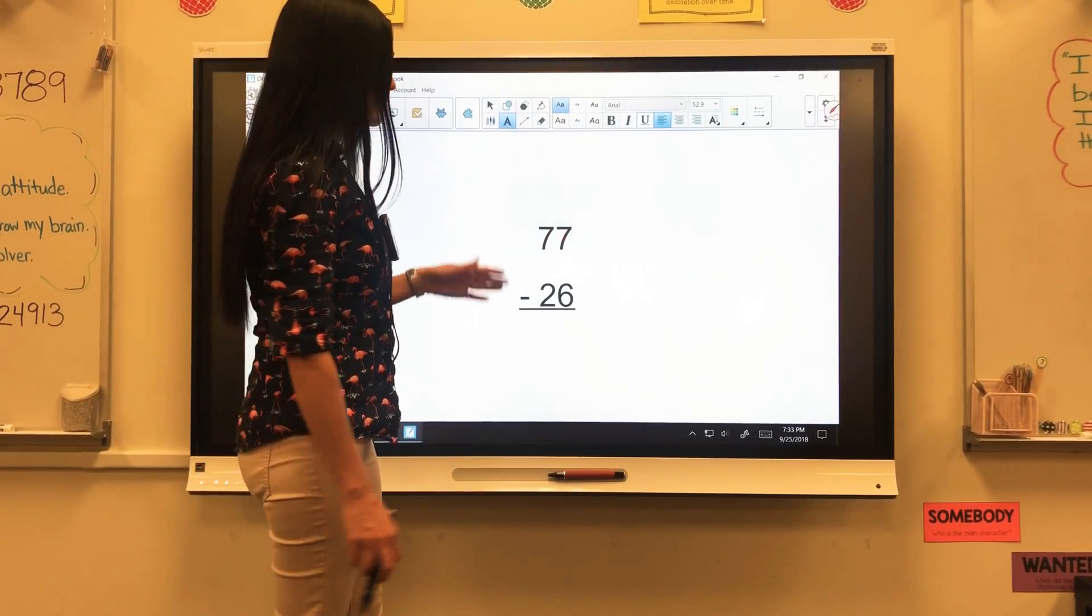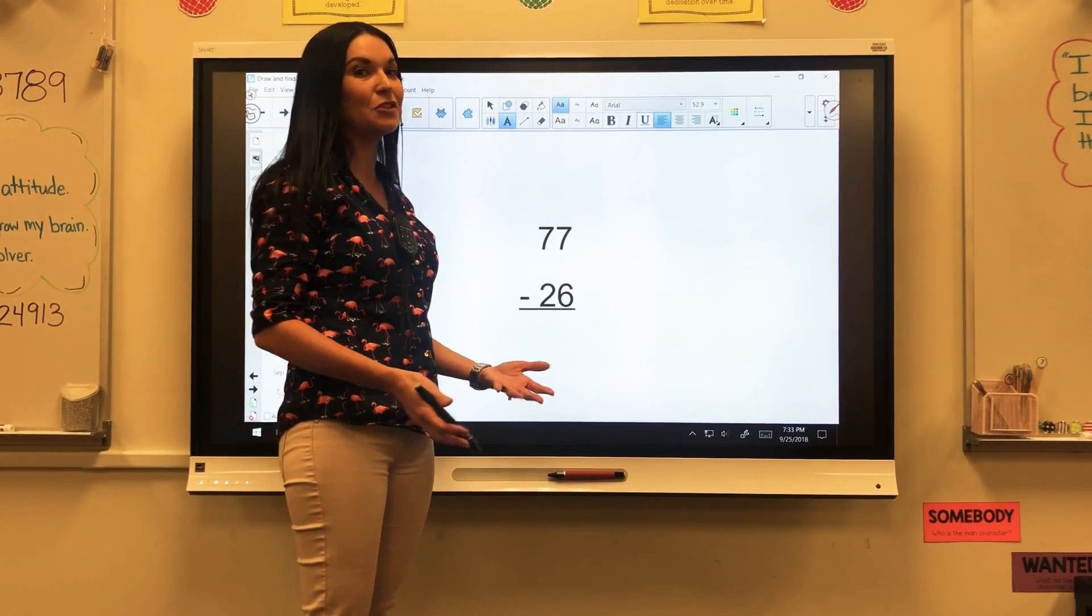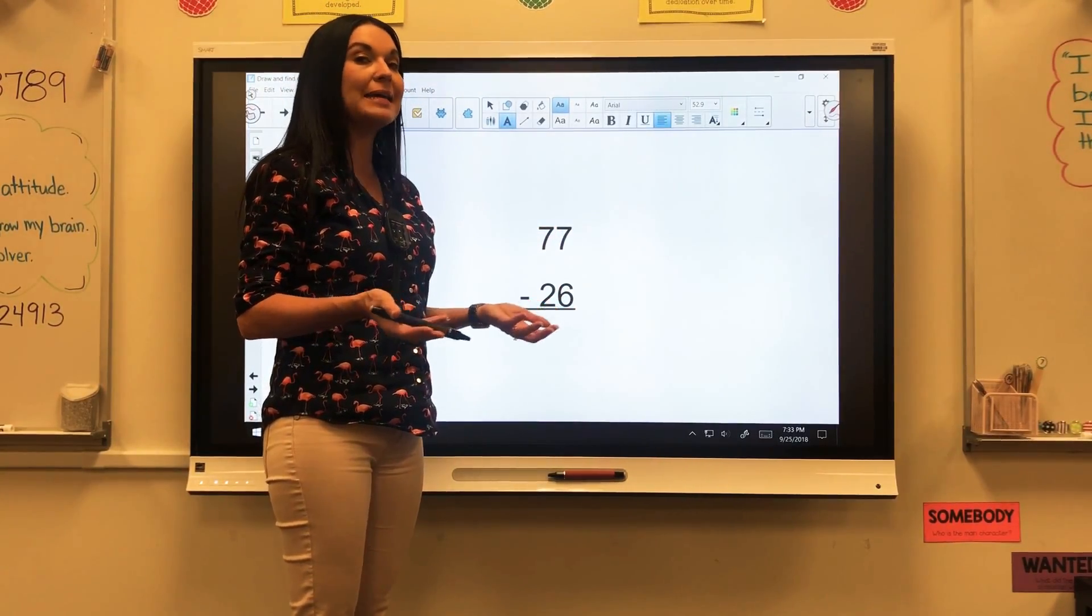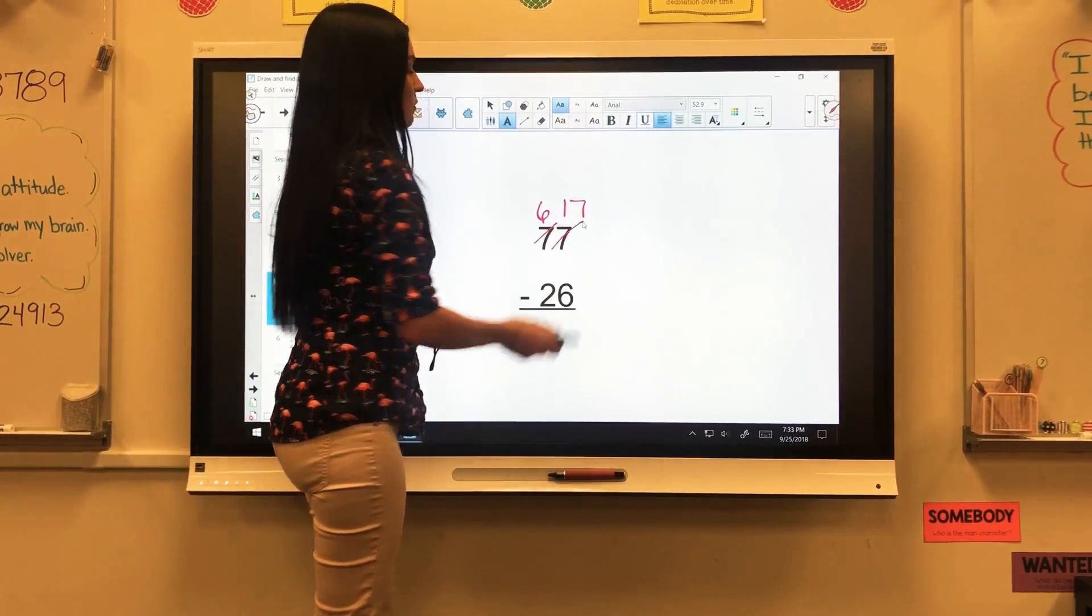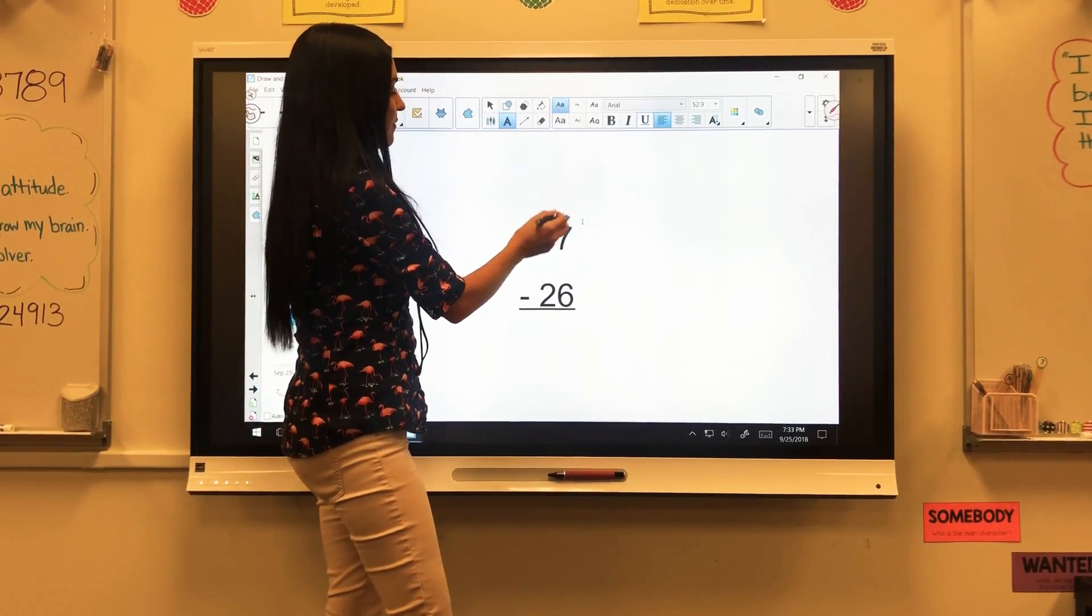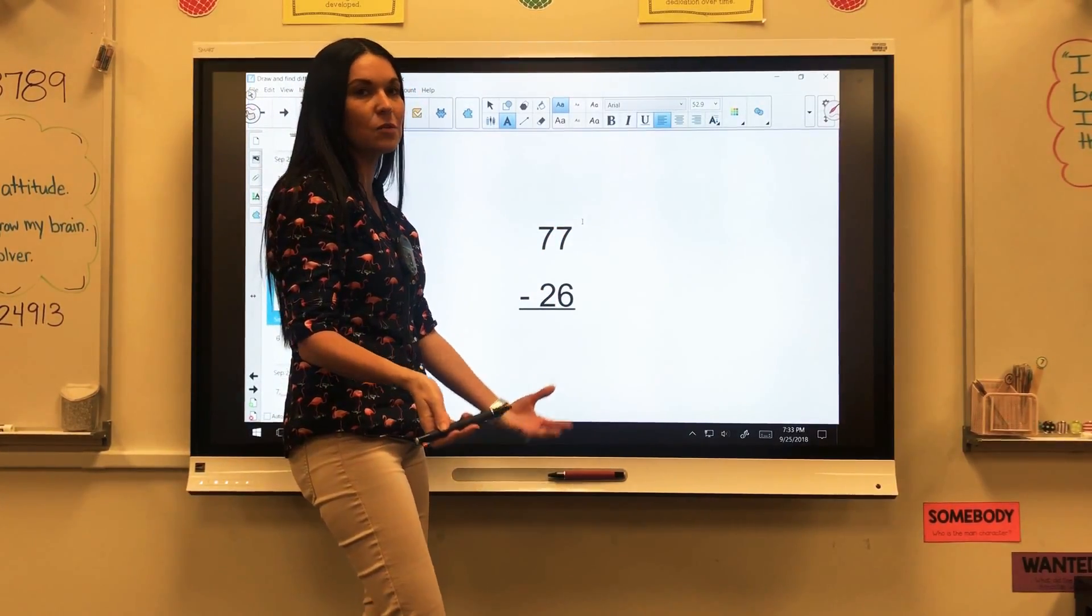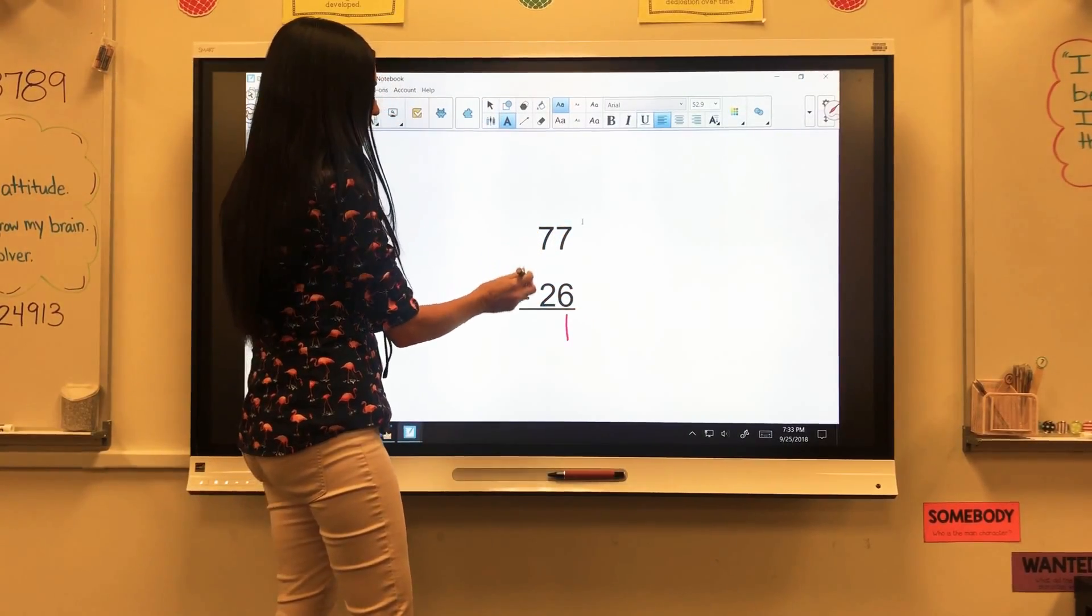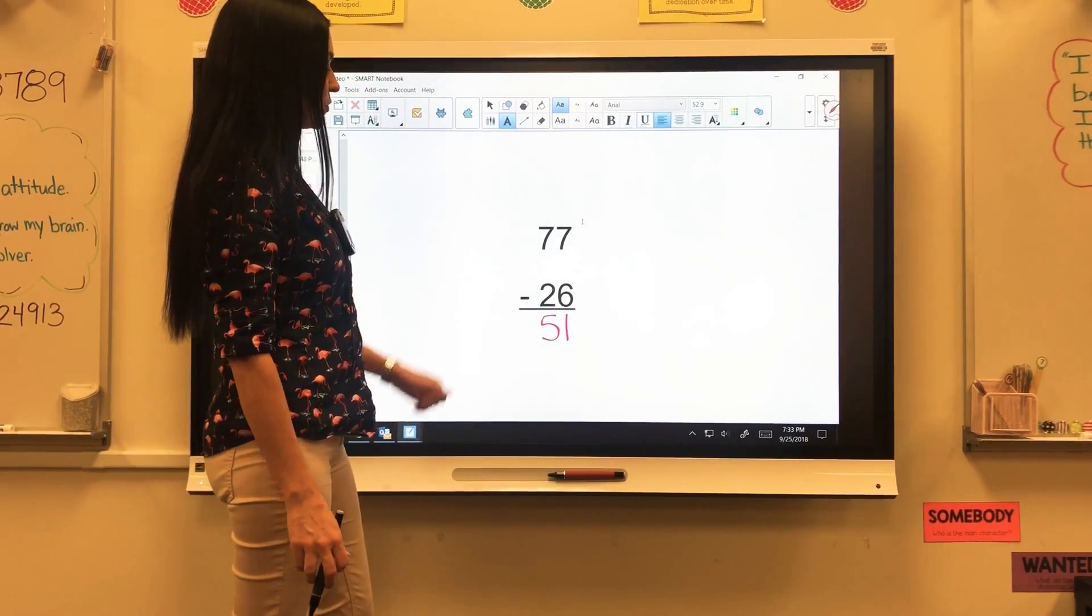Another one. Another thing that students need to watch for is make sure they're only regrouping when they need to. I have 77 minus 26. If I have 7 of something, I can take 6 away from that. But I have a lot of students that are crossing out and trying to regroup for no reason. So always think, is this a bigger number? If that's a bigger number, I'm good to go. So 7 is bigger than 6. If I have 7 of something, I can give 6 away. So 7 minus 6 is 1. 7 minus 2 is 5. So 77 minus 26 is 51.